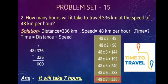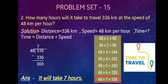Now we will solve the question. Solution: distance is equal to 336 kilometers, speed is equal to 48 kilometers per hour, and to find time, the formula is: time = distance divided by speed. So we calculate 336 kilometers divided by 48. Here 336 is the dividend and 48 is the divisor.